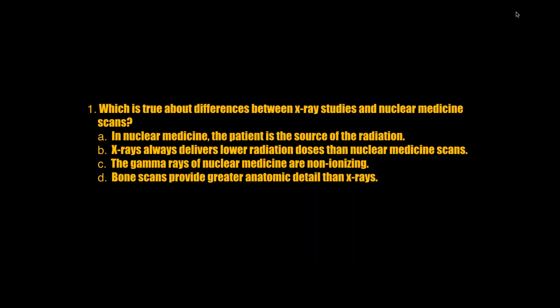Which is true about differences between x-ray studies and nuclear medicine scans? A is true — in nuclear medicine the patient becomes the source of radiation. B is false — x-rays do not always deliver lower radiation doses. C is false — nuclear medicine does use gamma rays, but they are not non-ionizing; that's in the ionizing part of the spectrum. D is false — bone scans do not provide greater anatomic detail; in general, nuclear medicine scans provide less crisp anatomic detail.